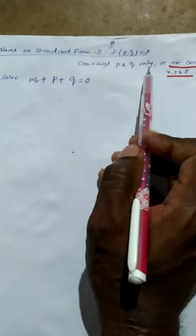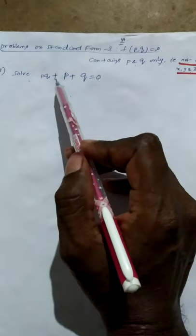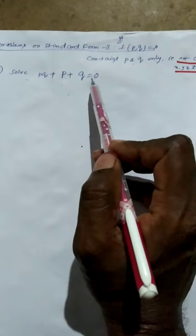In this video, we will discuss problems on standard form 1 of nonlinear PDE: f(p, q) = 0. That means the given PDE must contain p and q only, which does not contain x, y, or z. Consider the problem pq + p + q = 0. Before going to solve this problem, let us recall the working rule for standard form 1.